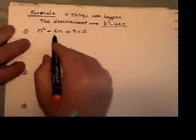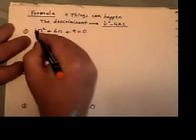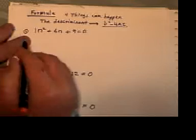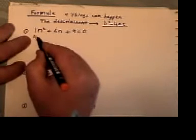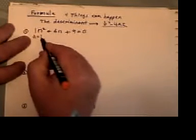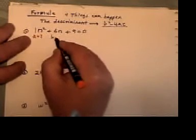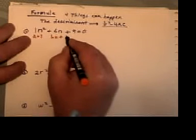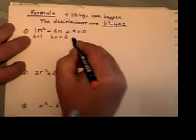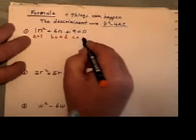In the first one, there's no number in front, so I read it as 1. A is 1, b is positive 6, and c is positive 9.